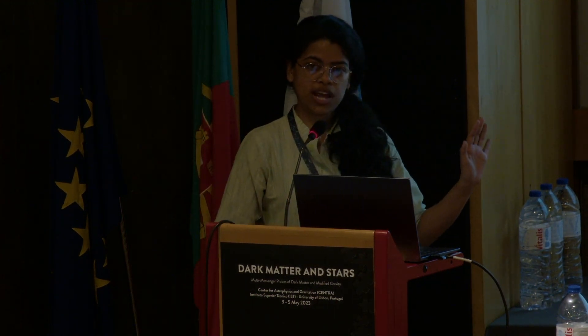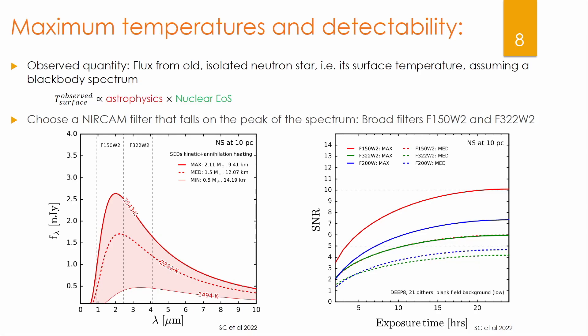To ask what can actually be seen by the JWST, we look at the spectral energy distribution. On the x-axis is wavelength, and the y-axis is the SED. The shaded region shows the band after accounting for all the uncertainties — this is the maximum temperature we get, 2543 Kelvin, for these mass and radius values of the neutron star, and this is the minimum temperature. We then select the JWST NIRCam band F150W2, which captures the peak of this SED, and calculate the signal-to-noise ratio as a function of exposure time using the publicly available exposure time calculator. The best-case scenario shows an SNR of 10 can be obtained with 24 hours of observation, with lines corresponding to different temperatures, and also the F322W2 broadband filter.